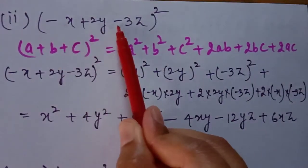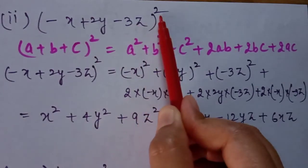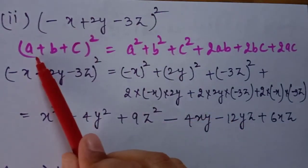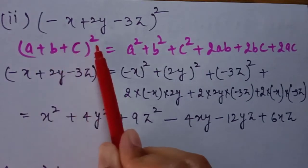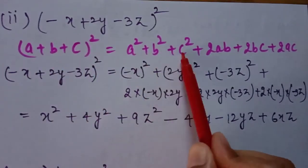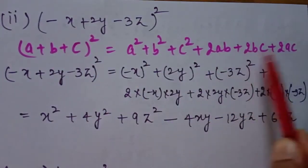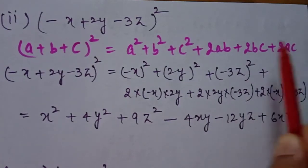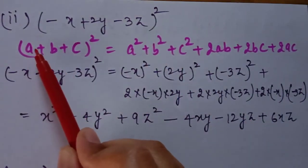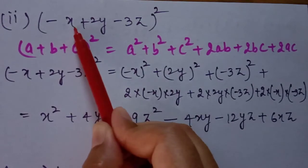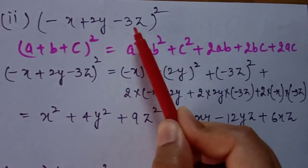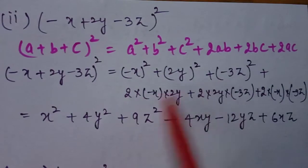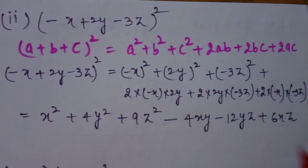The next part is (minus x plus 2y minus 3z) whole square. Using the identity (a + b + c) squared equals a squared plus b squared plus c squared plus 2ab plus 2bc plus 2ac, replace a with minus x, b with 2y, c with minus 3z, substitute and get your answer.